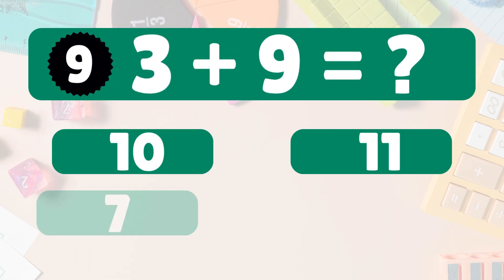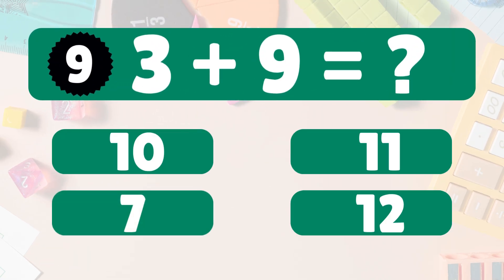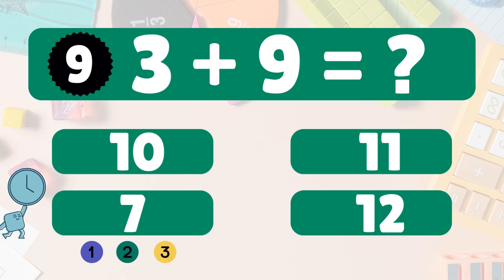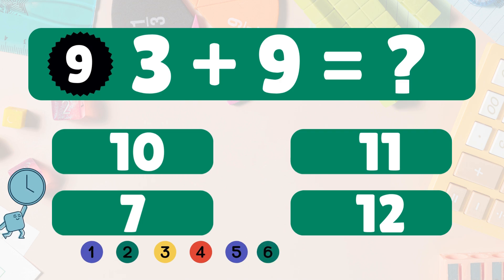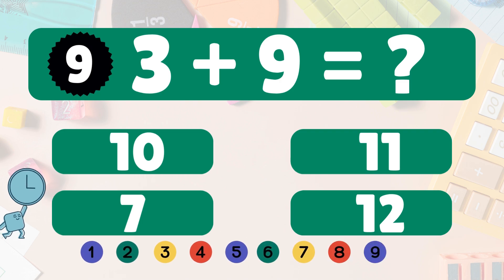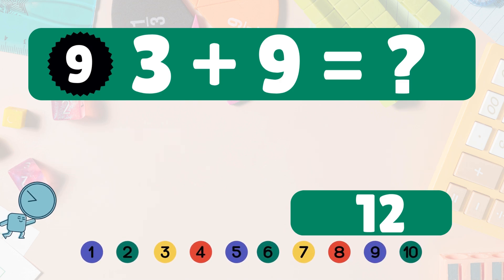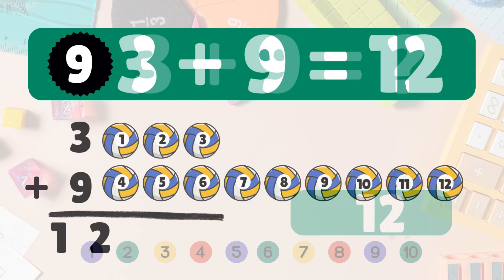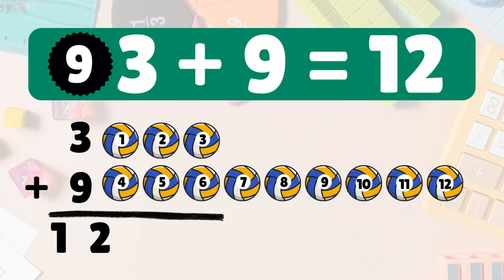Three plus nine equals what? Think. Three plus nine equals twelve.